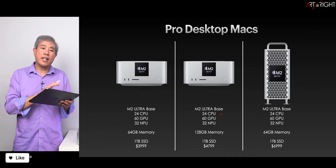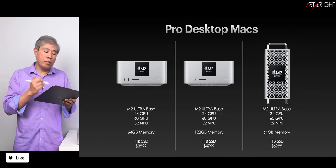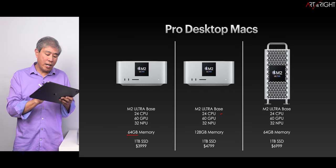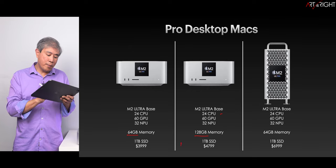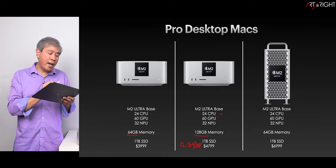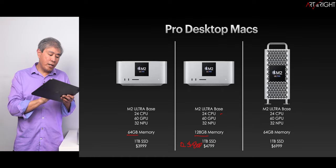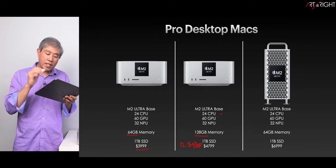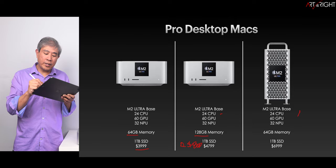We're going to look at two Mac Studios with M2 Ultra: one with 64 gigabytes of memory (stock) and one upgraded to 128 gigabytes, representing a price delta of around $800. Comparing the M2 Ultra Mac Studio to the Mac Pro with M2 Ultra, we're looking at a price delta of around $3,000.